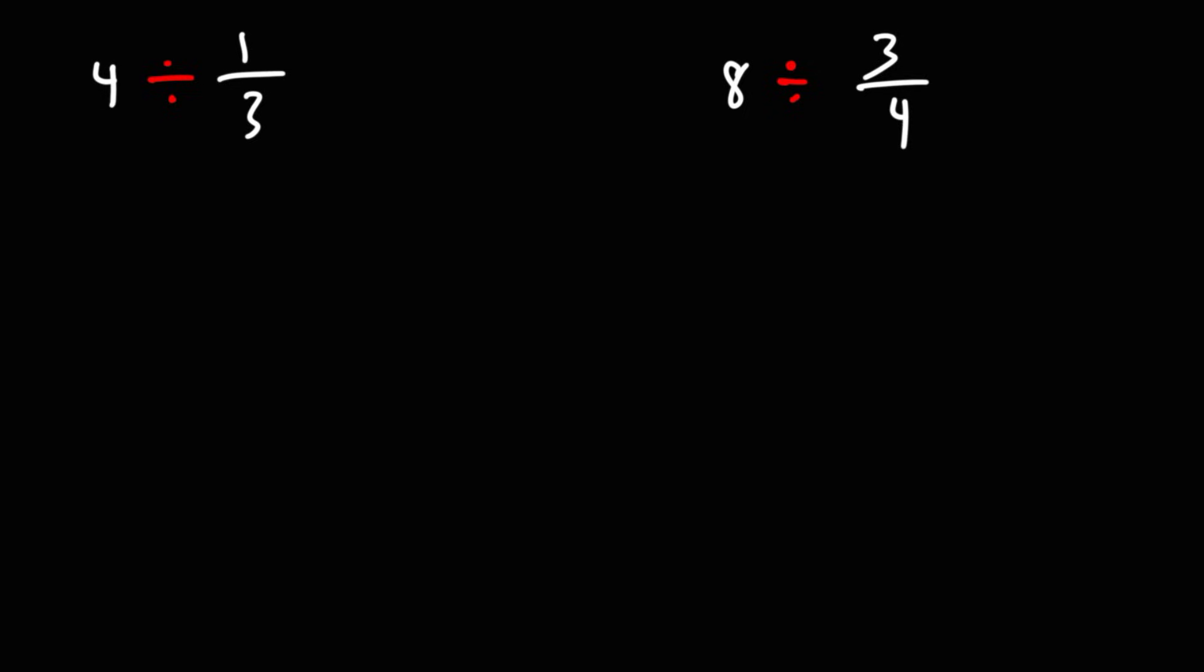In this video we're going to focus on dividing a whole number by a fraction. So we have 4 divided by 1 over 3. The first thing we want to do is write 4 as a fraction by putting it over 1.